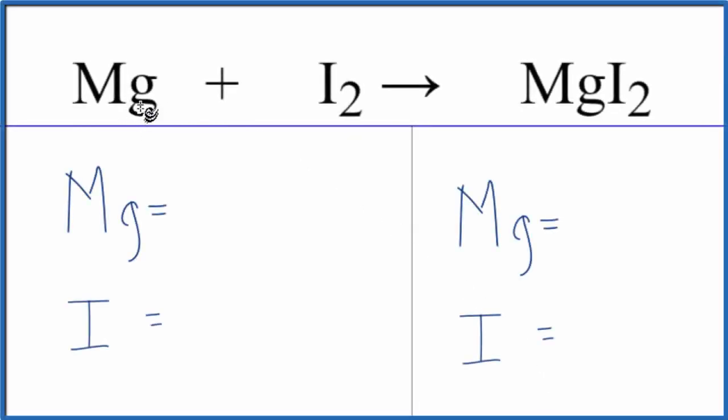In this video, we'll balance the equation for Mg plus I2 yields MgI2. This is magnesium metal plus iodine gas. We get magnesium iodide, it'll be a solid.